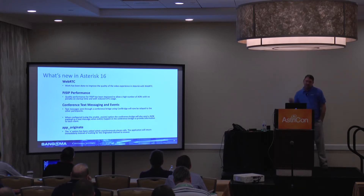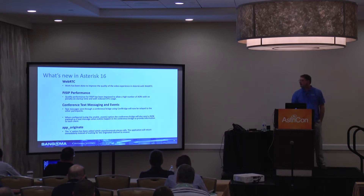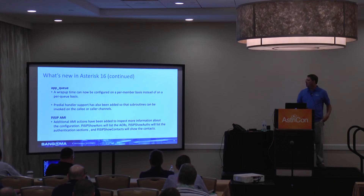App originate has a new async option, where the application will return immediately after the originate is issued rather than being blocking. For queues within Asterisk, the wrap-up time can now be configured per queue member instead of per queue, which quite a few people will be happy about. The PJ SIP AMI events and actions have been extended, with some actions to show the different record types.